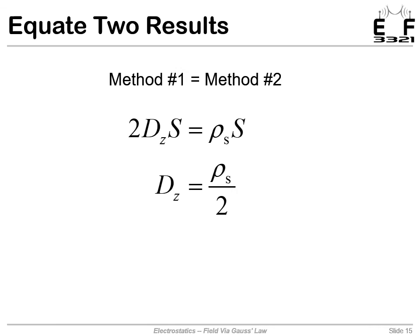Well, the s's cancel. We can solve for d_z and we get rho s over 2. And then we can write d as a vector quantity as rho s over 2 in the z direction.